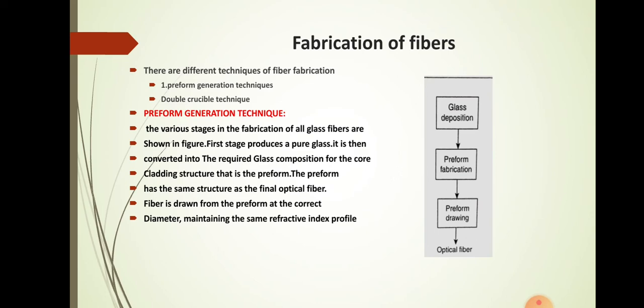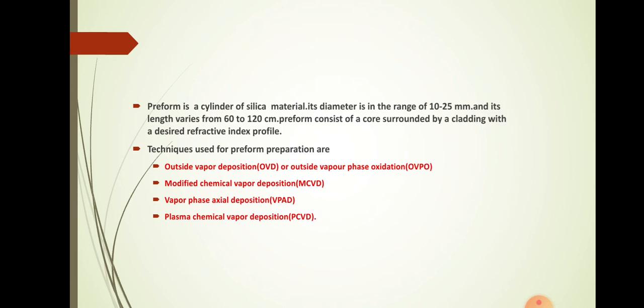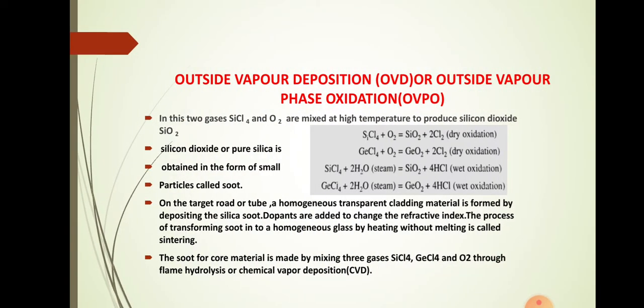A preform is a cylinder of silica material with a diameter in the range of 10 to 25 millimeters and a length varying from 60 to 120 centimeters. The preform consists of a core surrounded by a cladding with a desired refractive index profile. The techniques used for preform preparation are: outside vapor deposition (OVD), also called outside vapor phase oxidation (OVPO); modified chemical vapor deposition (MCVD); vapor phase axial deposition (VAPD); and plasma chemical vapor deposition. OVD is commonly asked in university examinations.